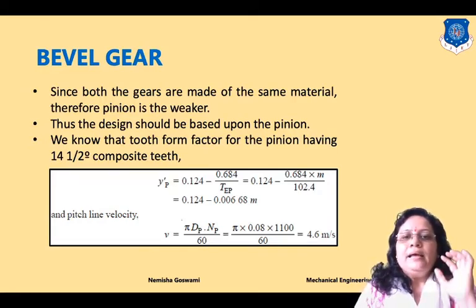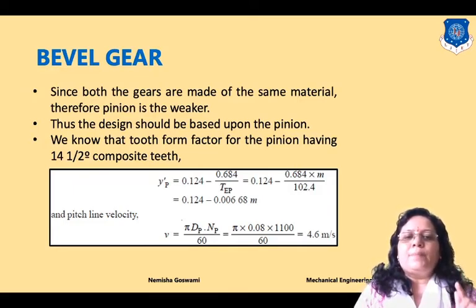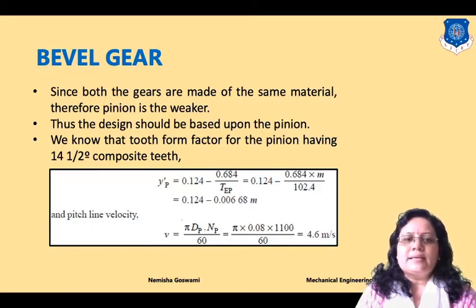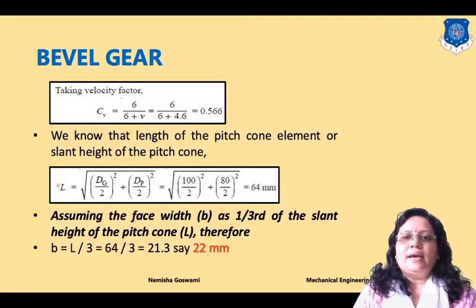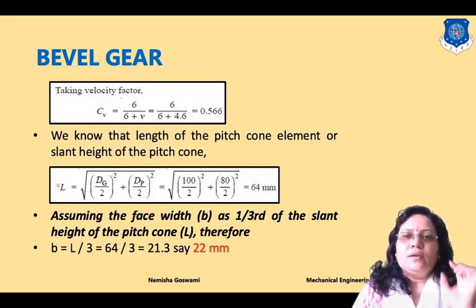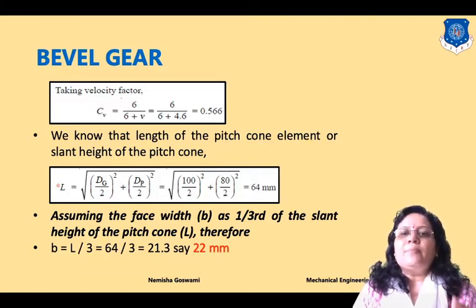Next, we find the pitch line velocity: v = π × dp × np / 60 = 4.6 m/s. The velocity factor for this case is: Cv = 6/(6 + v) = 6/(6 + 4.6) = 0.566.